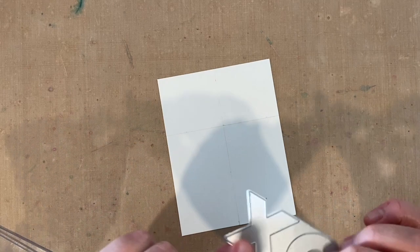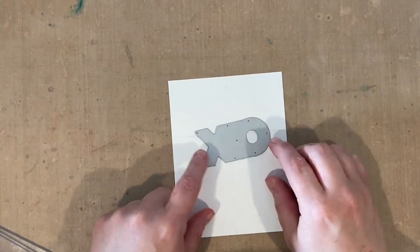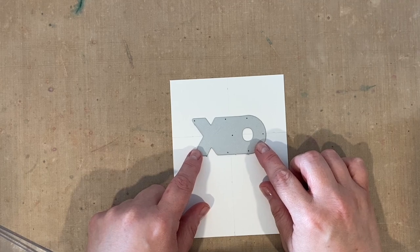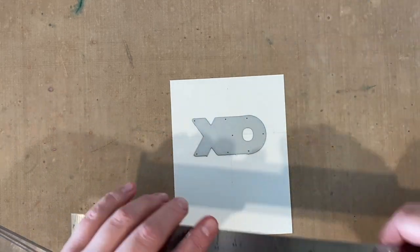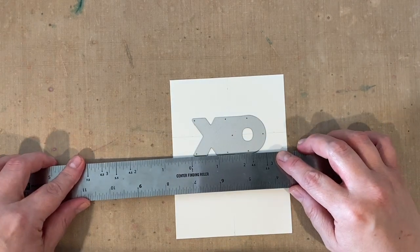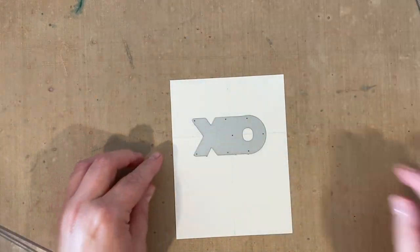Now if you don't have a hinge die, you can also do this with a regular die if you use a partial die cutting technique. So I've got the X and the O from the Love Icon set and I've got some pencil lines again on my paper. I've got one down the middle again and then I've got one across the top and that is where I'm going to want my die cut to stop cutting. So let me show you what I mean.